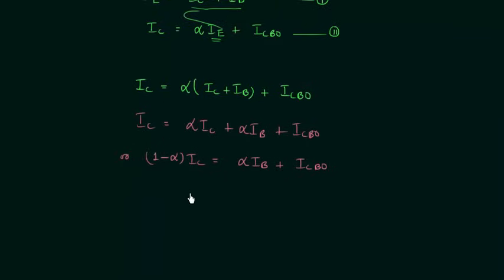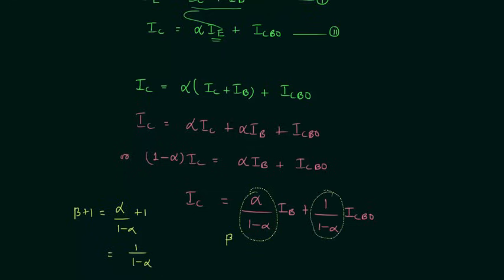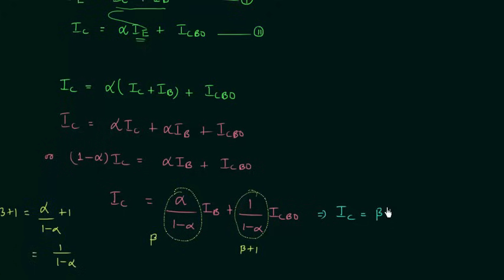Dividing both sides by 1 minus alpha, this quantity alpha divided by (1 minus alpha) is beta. And beta plus 1 equals alpha/(1 minus alpha) plus 1, which simplifies to 1/(1 minus alpha). So I can write the equation as IC equal to beta times IB plus (beta plus 1) times ICBO.